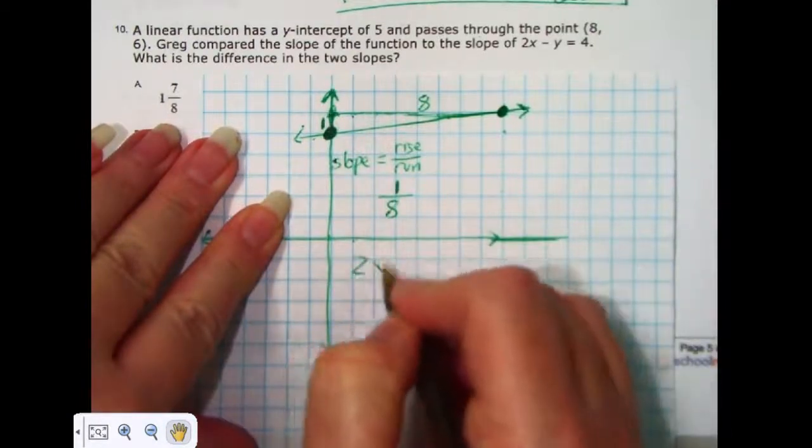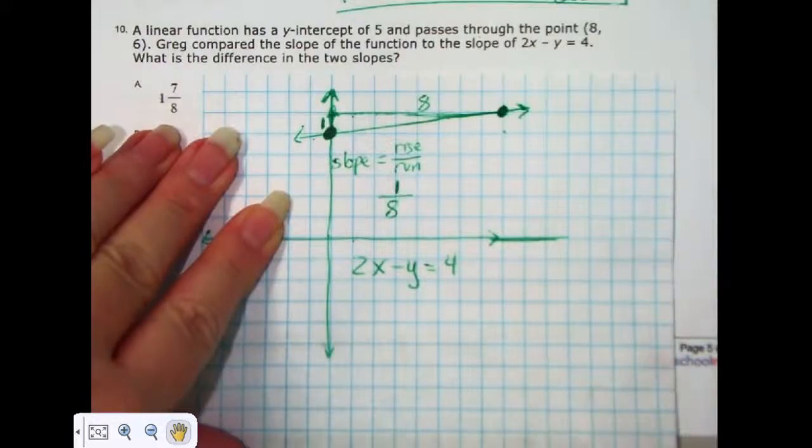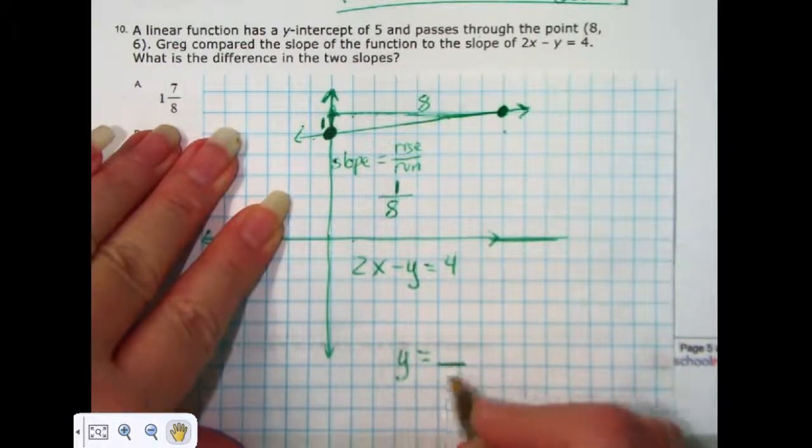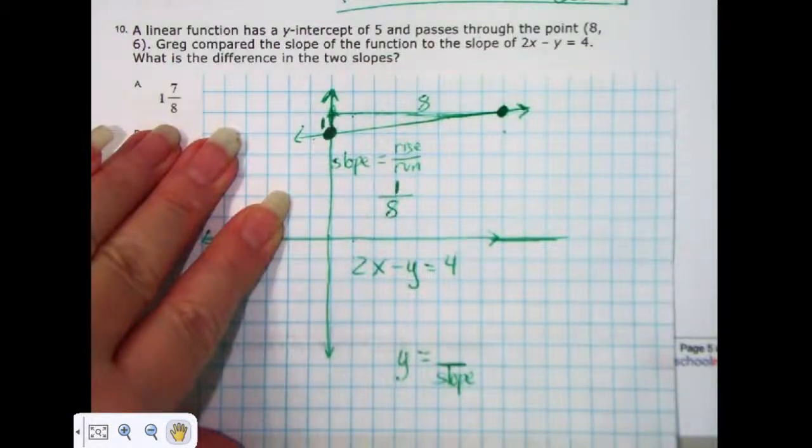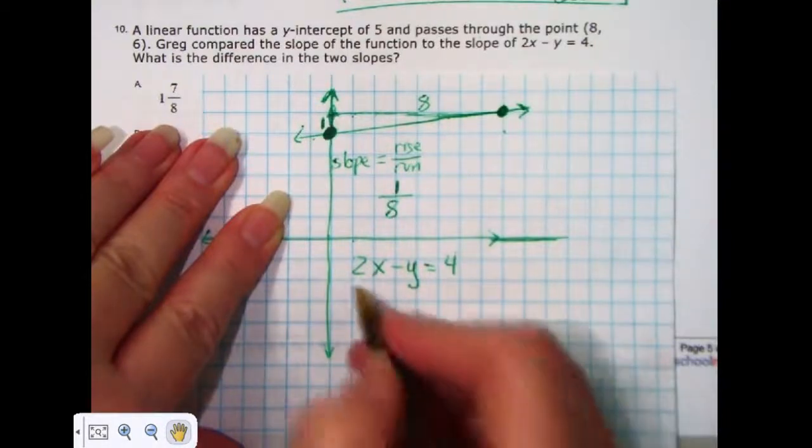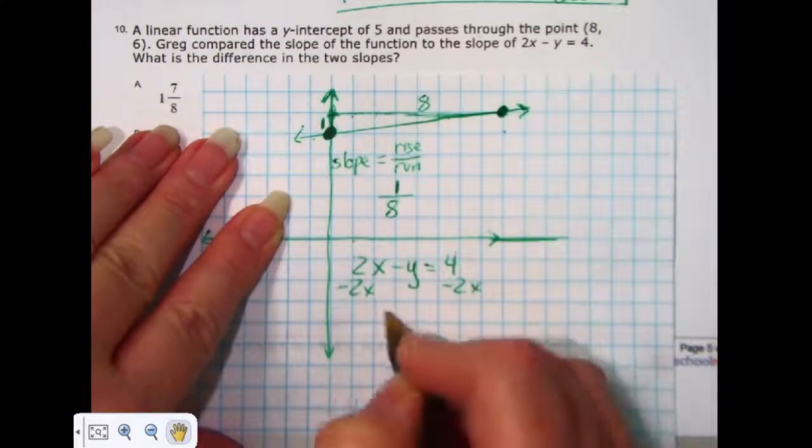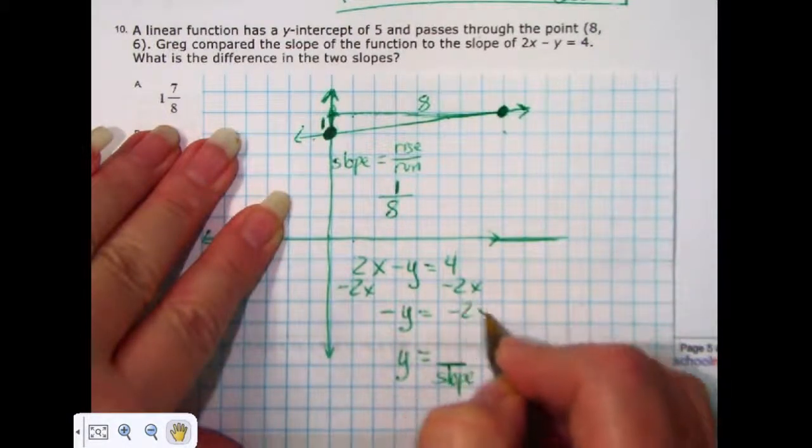And this is one of those that's not in the form that I want it to be. So, I want it to be in that y equals form so that I can tell what the slope is because I know the slope is the coefficient of the x. So, the first thing I do is subtract 2x. And then I have negative y equals negative 2x plus 4.